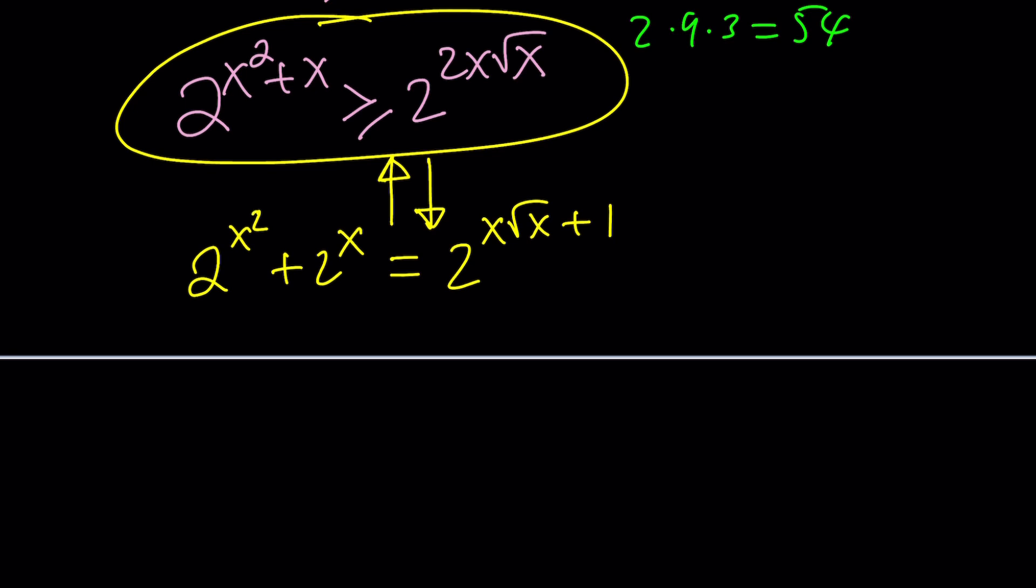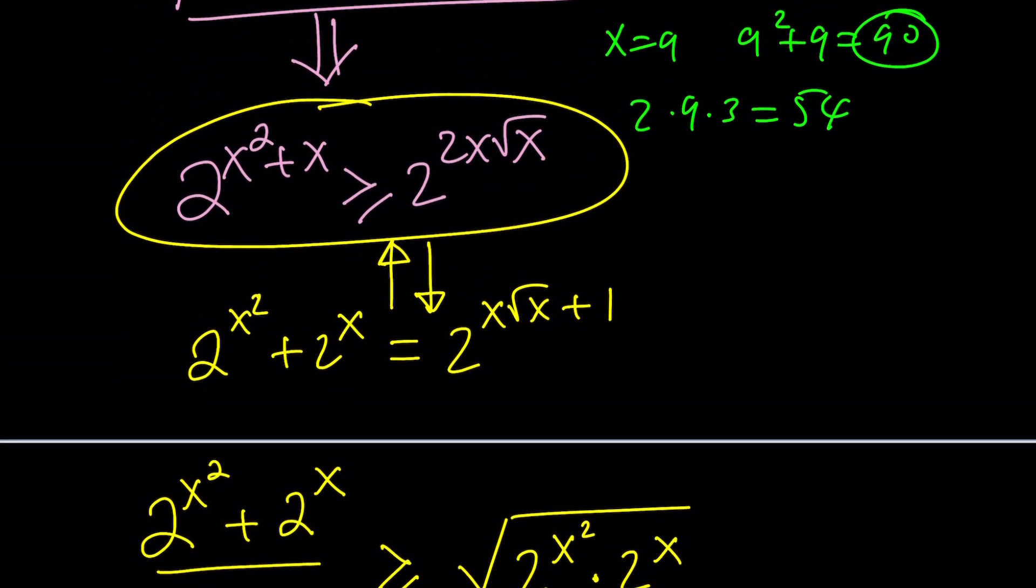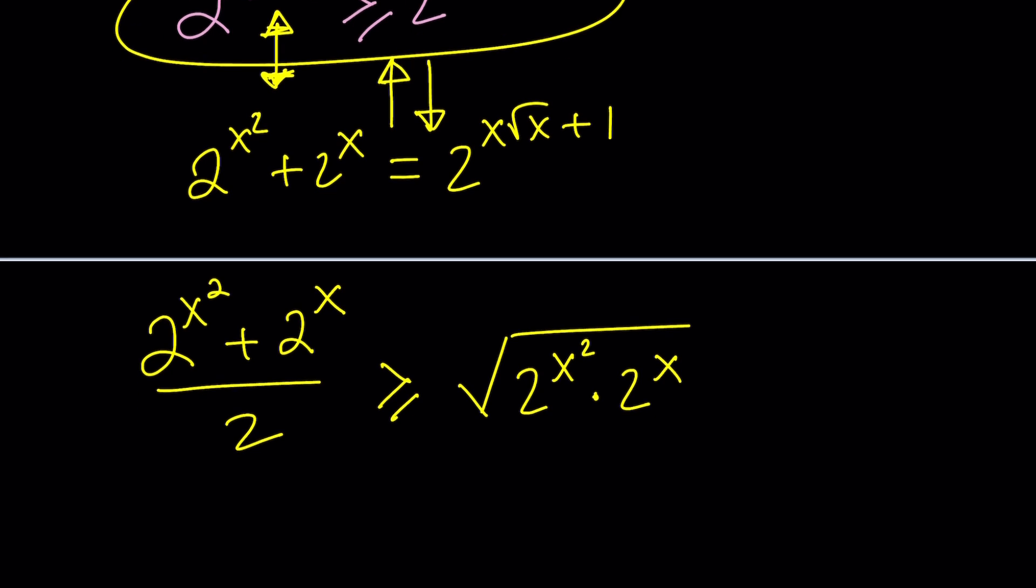Here's what we can do. We can start with the left-hand side, which is 2 to the power of X squared plus 2 to the power of X, and apply the AM-GM inequality one more time. This is what makes this problem more fun. The fact that we use AM-GM twice. The arithmetic mean of these two quantities is going to be greater than or equal to their geometric mean, which is square root of 2 to the X squared times 2 to the X. This is how we can bring these two together.